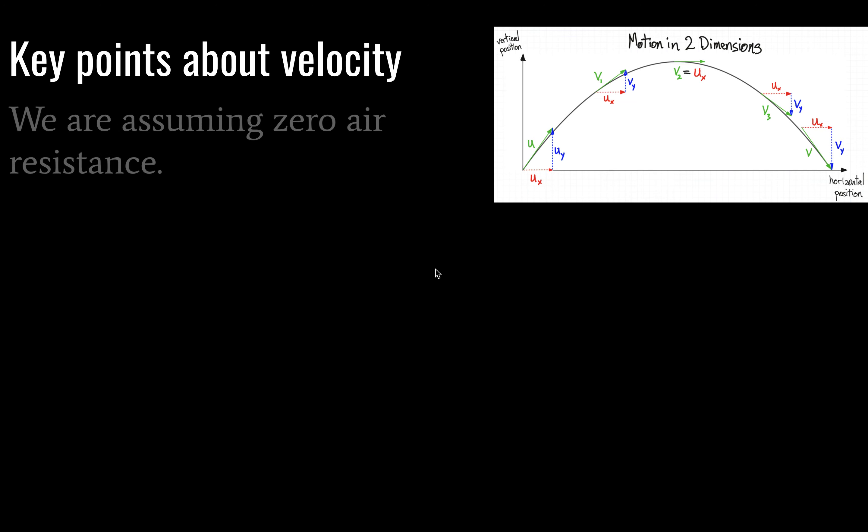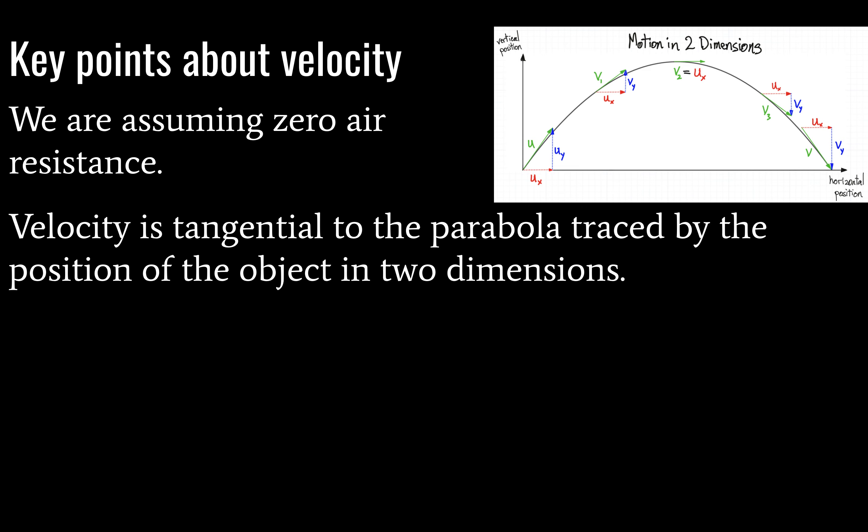So some key points. For this particular graph, we're assuming zero air resistance. Note that velocity is tangential to the parabola traced by the position of the object in two dimensions.